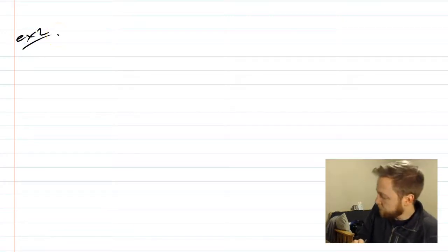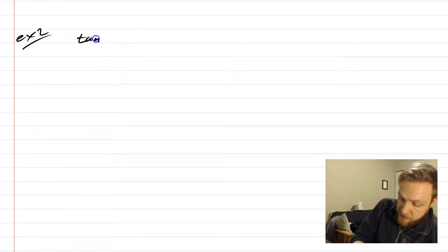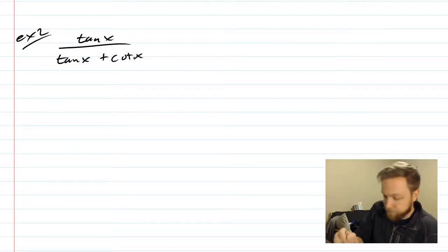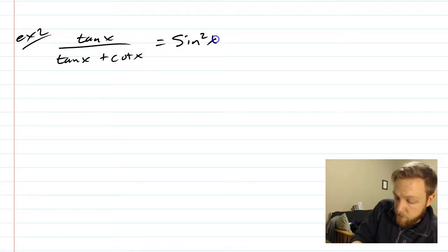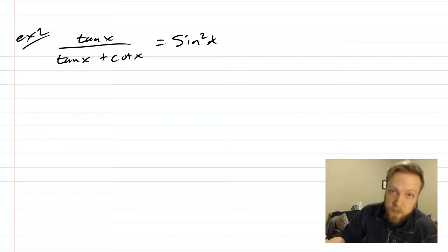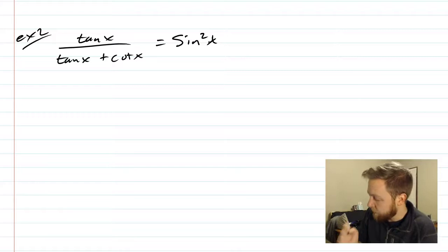Example number two. We're going to have tan x all over tan x plus cotangent x. We want to show that this is equal to sine squared of x. So the first thing I think of here is if I can rewrite these things in terms of sine and cosine, my life might be a little easier.